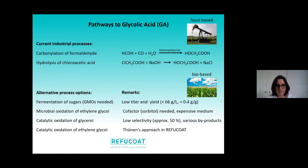For example, fermentation of sugars — however, that requires genetically modified organisms and so far titers and yields are too low to be of interest. There is also microbial oxidation of ethylene glycol, but the drawback is that cofactors are needed and the medium is quite expensive. Another possibility is catalytic oxidation of glycerol, but that also has low selectivity and various by-products. So we decided to take the approach of catalytic oxidation of ethylene glycol.